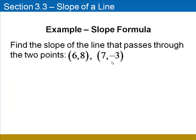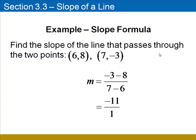Here's an example. We're going to find the slope of the line passing through the points (6, 8) and (7, negative 3). (6, 8) is our first point, x1, y1. (7, negative 3) is x2, y2. Using the formula, the second y minus the first: negative 3 minus 8, over the second x minus the first: 7 minus 6. This simplifies to be negative 11 over 1, or simply negative 11.